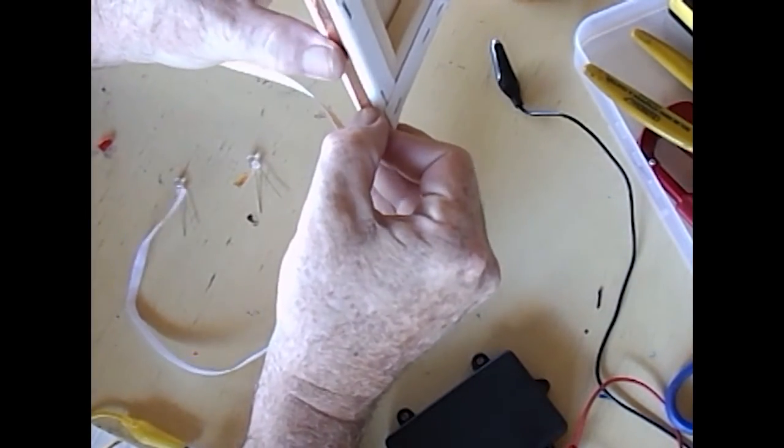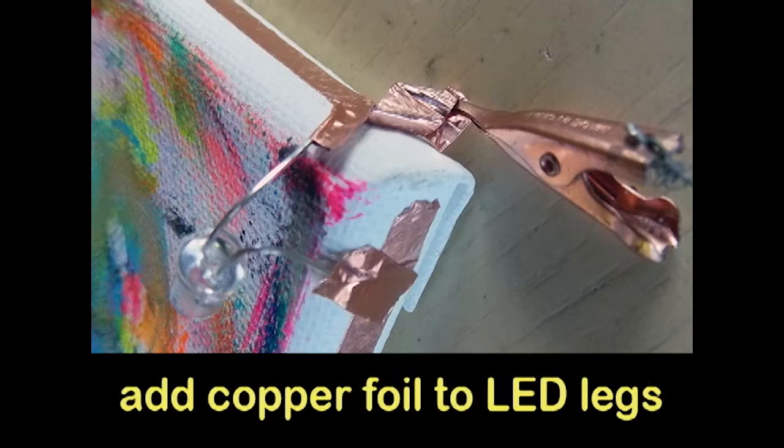At first I just shoved the LEDs in behind the tape but it was a bit fiddly. So I beefed up the legs by wrapping them with copper foil and then putting them in the circuit.